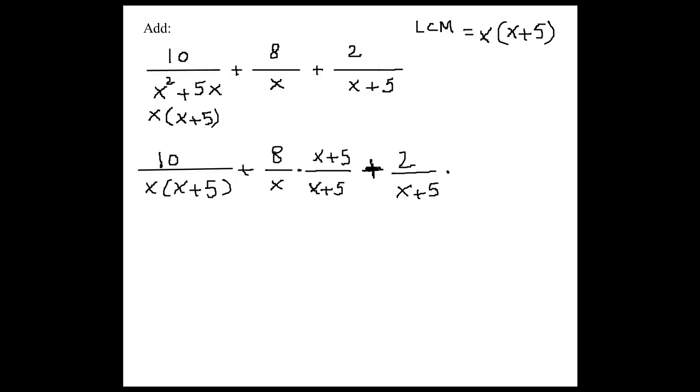So the, exactly. The last one would be just x over x. So now we have 10 over x times x plus 5 plus 8 times x plus 5 over LCM, which is x times x plus 5. Plus 2x over x times x plus 5.